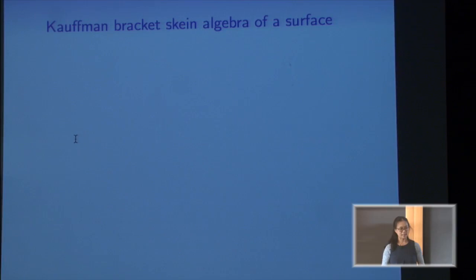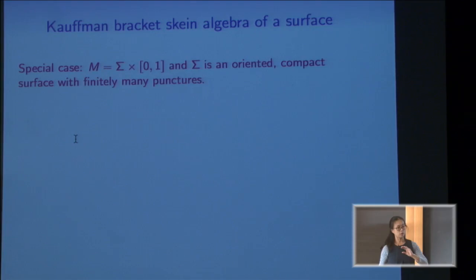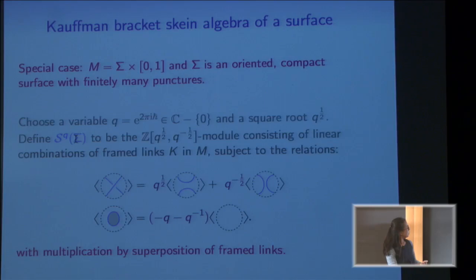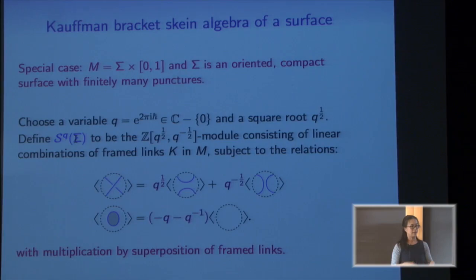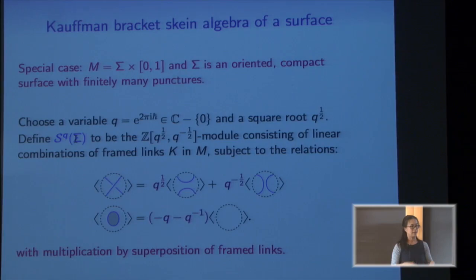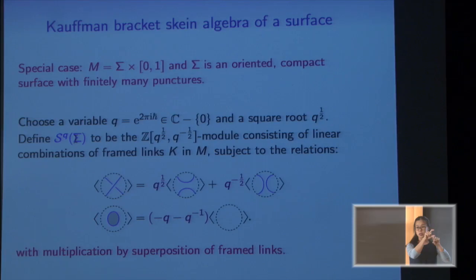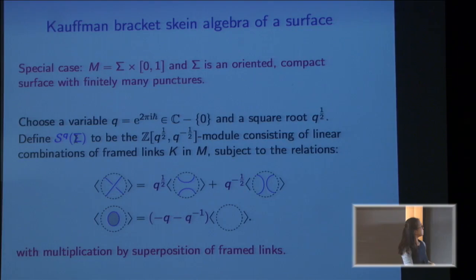Today I'll specialize to the case where your three-manifold is a thickened surface — not just a surface, but with a little thickness so that I have over and under crossings. In this case you can run the same machinery, and at the end you get a multiplication by stacking. This works because if you have a surface cross [0,1] and another copy surface cross [1,2], you can put one on top of the other to get surface cross [0,2]. A link in one thickened surface times a link in another gives a link in the combined thickened surface.